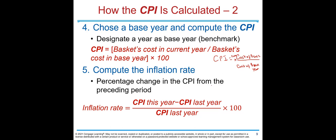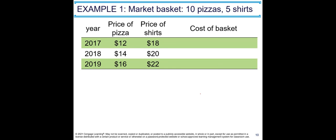After calculating CPI, we compute the inflation rate. The inflation rate is the percentage change in CPI from the preceding period. The formula is: inflation rate = (CPI this year minus CPI last year) divided by CPI last year, times 100. A simpler equivalent formula is: (CPI this year divided by CPI last year, minus 1) times 100. Both formulas give the same result.